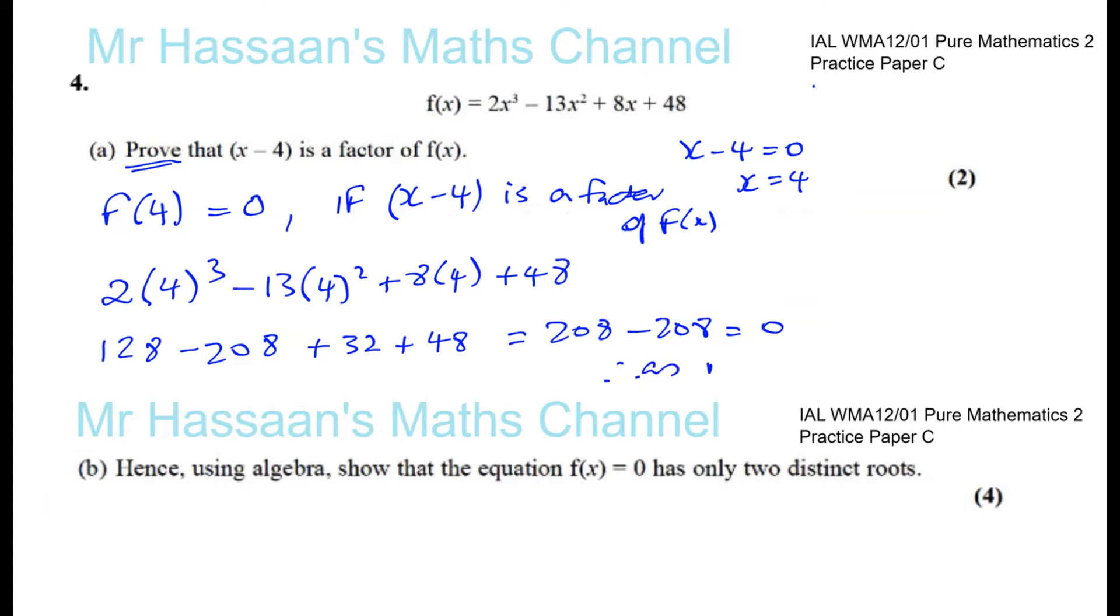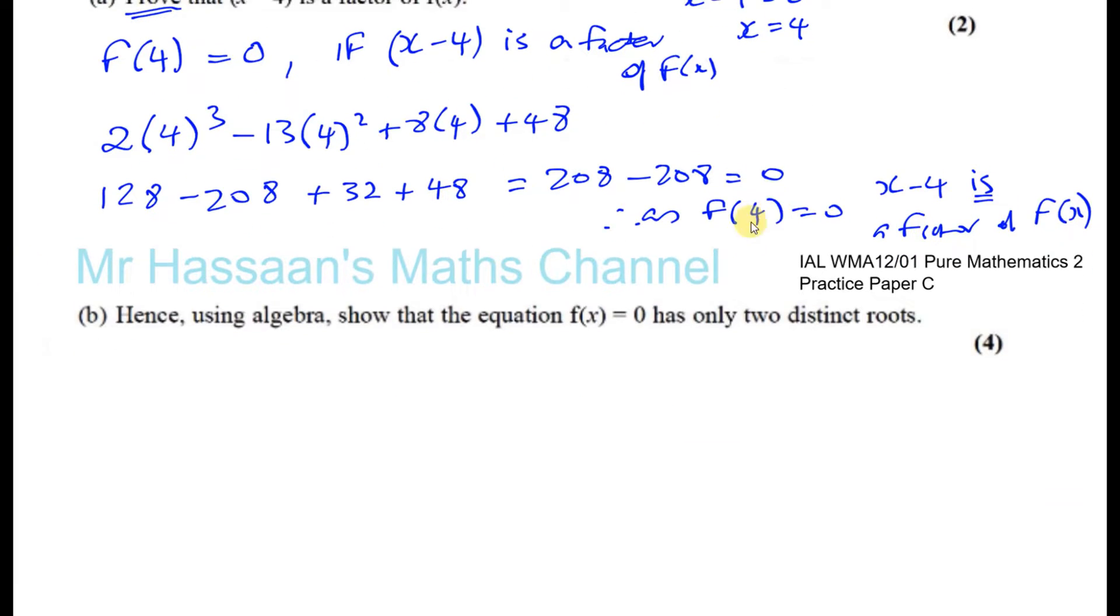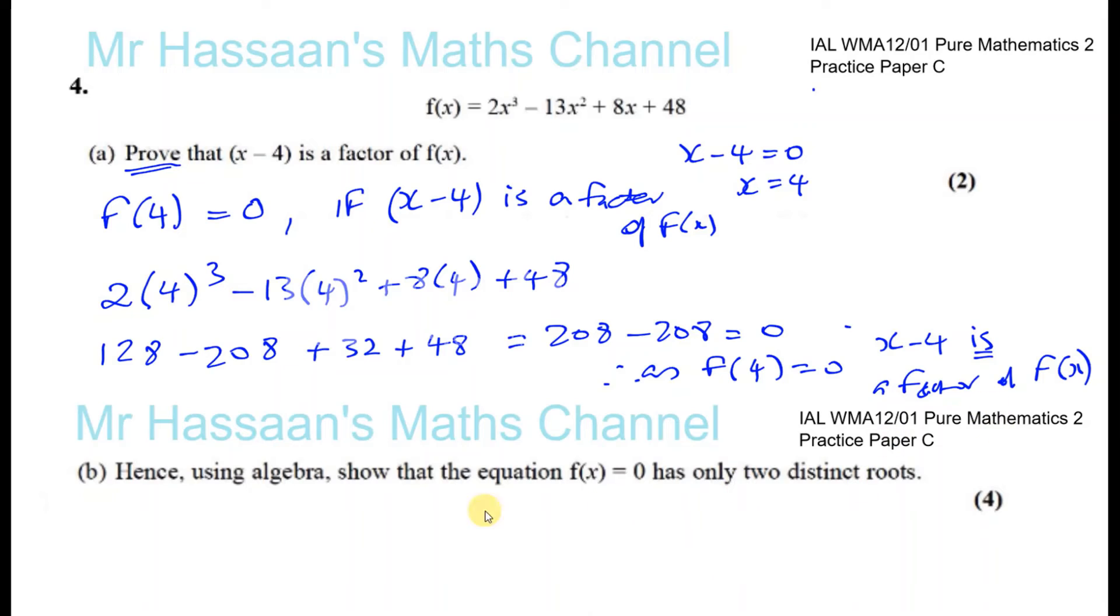So we say yes, therefore, as f(4) equals 0, x minus 4 is a factor of f(x). That's the proof. The proof should have a statement that explains the reasoning behind our proof. Don't just put f(4) equals 0 and leave it at that. You have to have some explanation, especially when it says proof.